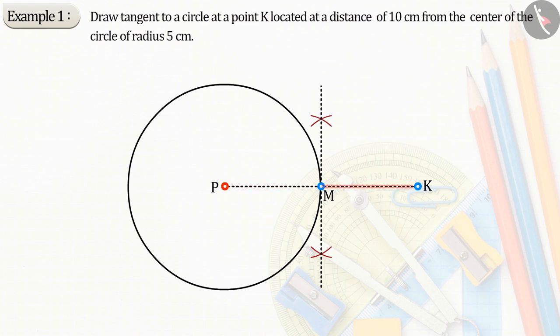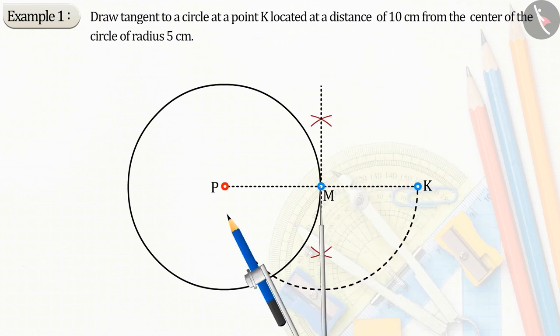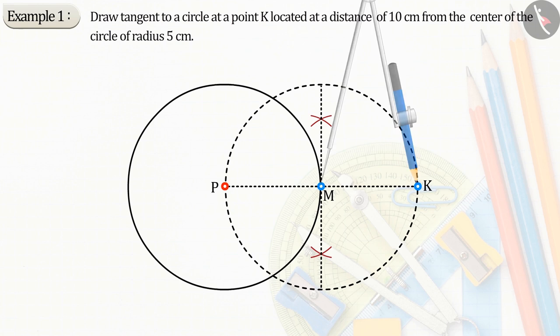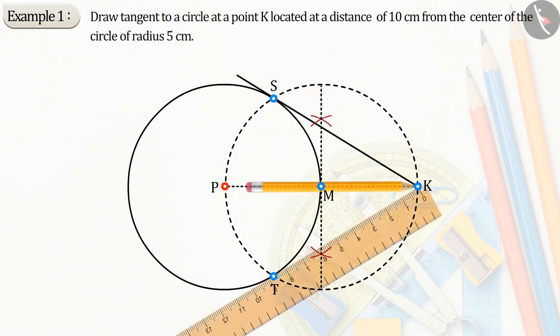Now, let PM or MK be the radius. Let's draw a circle from the point M, which intersects the first circle at point S and T. From point K, draw lines through point S and T.